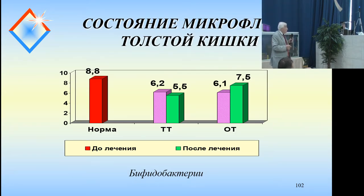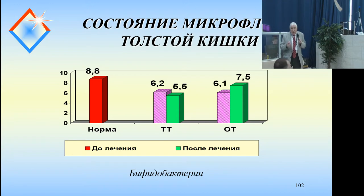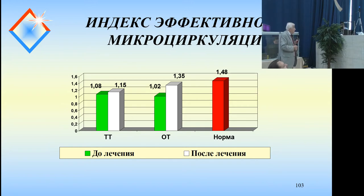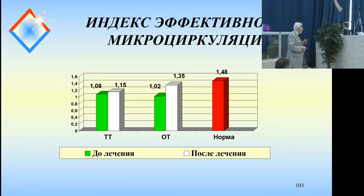Condition of microflora of the gut: the red bar is the norm — you can see what we have in the large bowel microflora and the results after ozone therapy. Regarding the microcirculation index, which relates to the penetration of erythrocytes into capillary cavities — everything normalizes because of the ozone therapy. Next slide please.